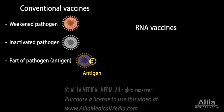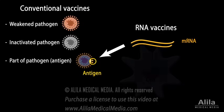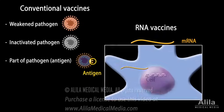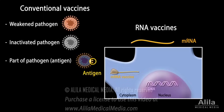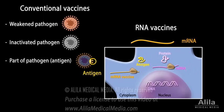RNA vaccines are a new generation of vaccines. Instead of the antigen itself, RNA vaccines contain a messenger RNA, mRNA, that encodes for the antigen. Once inside the body's cells, the mRNA is translated into protein — the antigen — by the same process the cells use to make their own proteins.